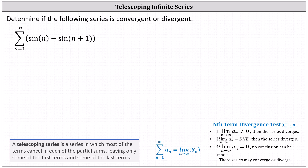To determine whether the telescoping series converges or diverges, we'll determine a formula for the partial sum S sub n, and then take the limit of that as n approaches infinity. If the limit as n approaches infinity of S sub n exists, the series converges and we know what it converges to. If the limit doesn't exist, the infinite series diverges.